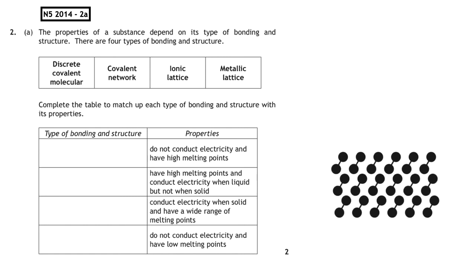The easiest one to start with is covalent molecular. That's the only one which has low melting points and boiling points. So the correct placement for that is that they do not conduct electricity and have low melting points.